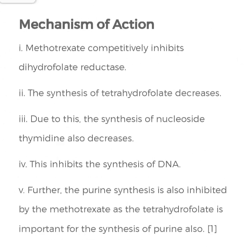The mechanism of action of Methotrexate: Methotrexate competitively inhibits dihydrofolate reductase. The synthesis of tetrahydrofolate decreases, and due to this, the synthesis of the nucleoside thymidine also decreases, which inhibits the synthesis of DNA. Further, purine synthesis is also inhibited by Methotrexate, as tetrahydrofolate is important for purine synthesis as well.